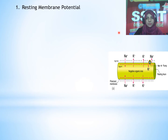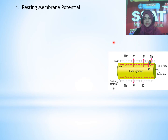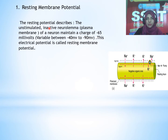There are some ions in neurons — sodium ions and potassium ions are present. Sodium ions are present outside, and potassium ions are present inside. The outer membrane has a negative charge. So what is resting membrane potential? The resting potential describes the unstimulated, inactive neurolema. The plasma membrane of neurons maintains a charge of minus 65 millivolts, variable between minus 40 millivolts to minus 90 millivolts. This electric potential is called resting membrane potential.